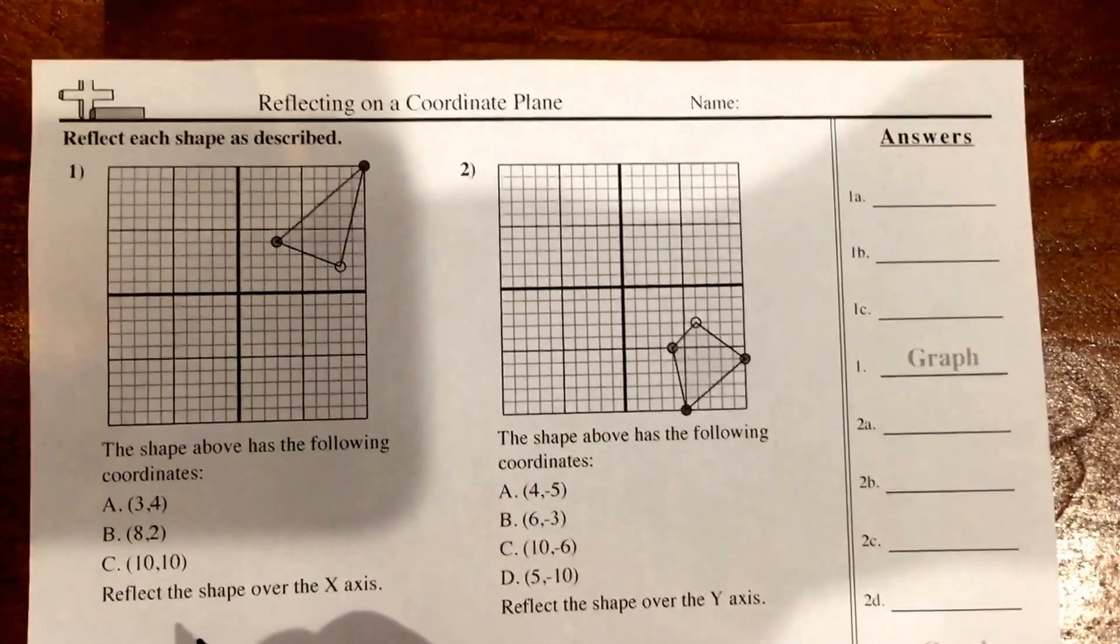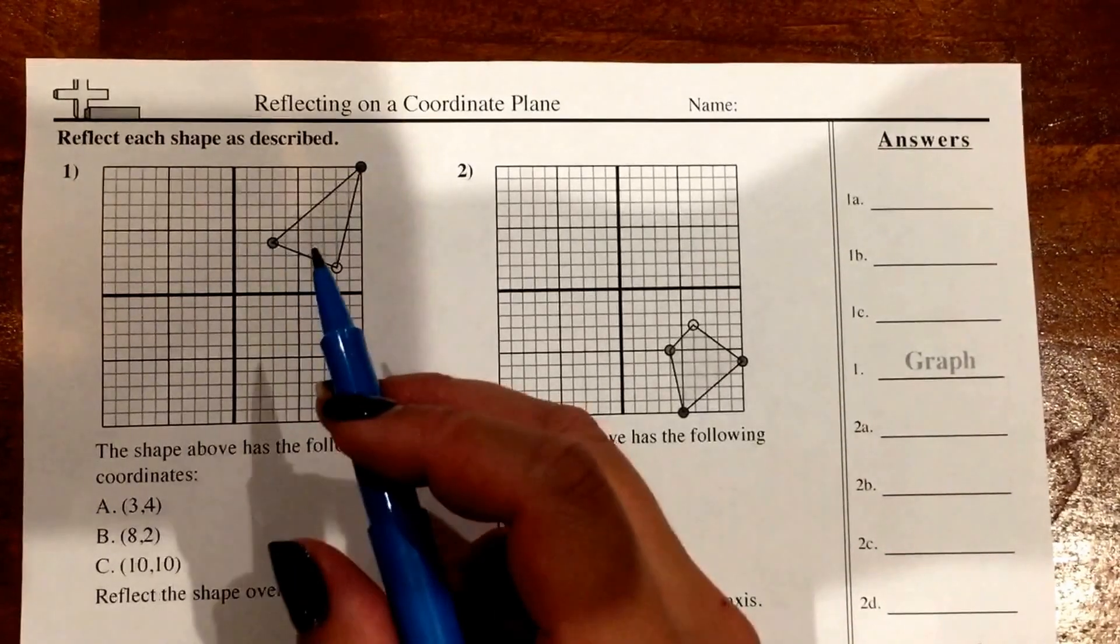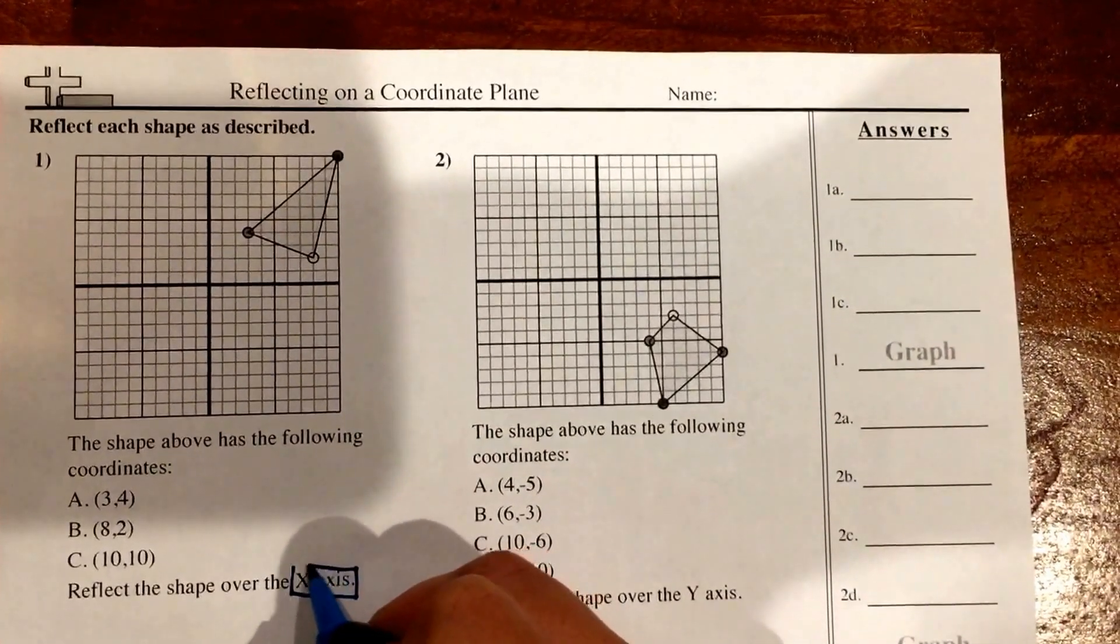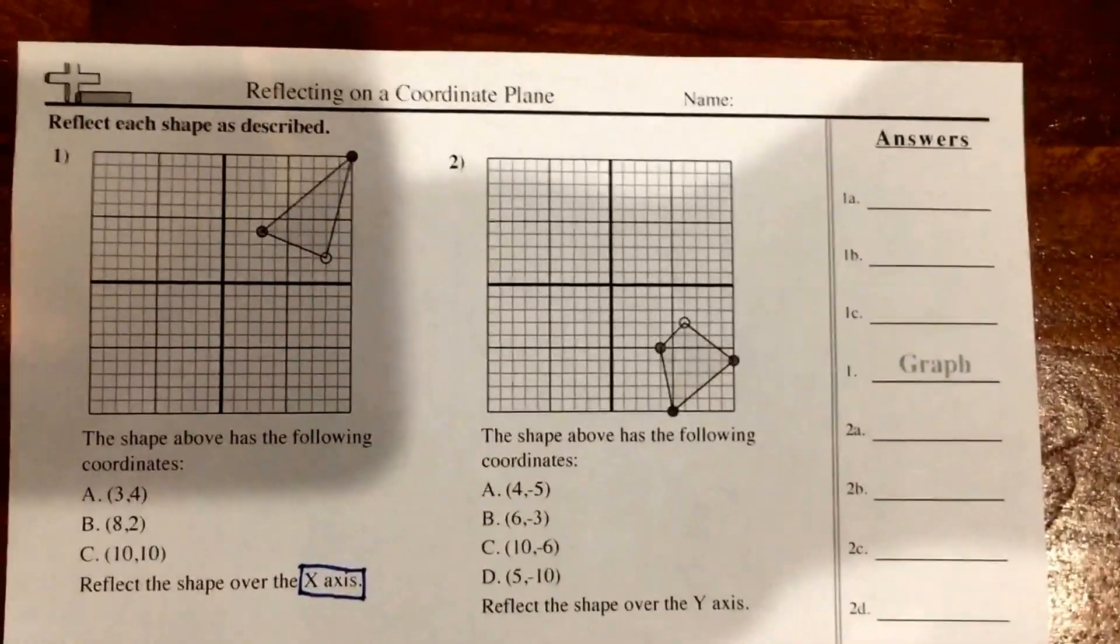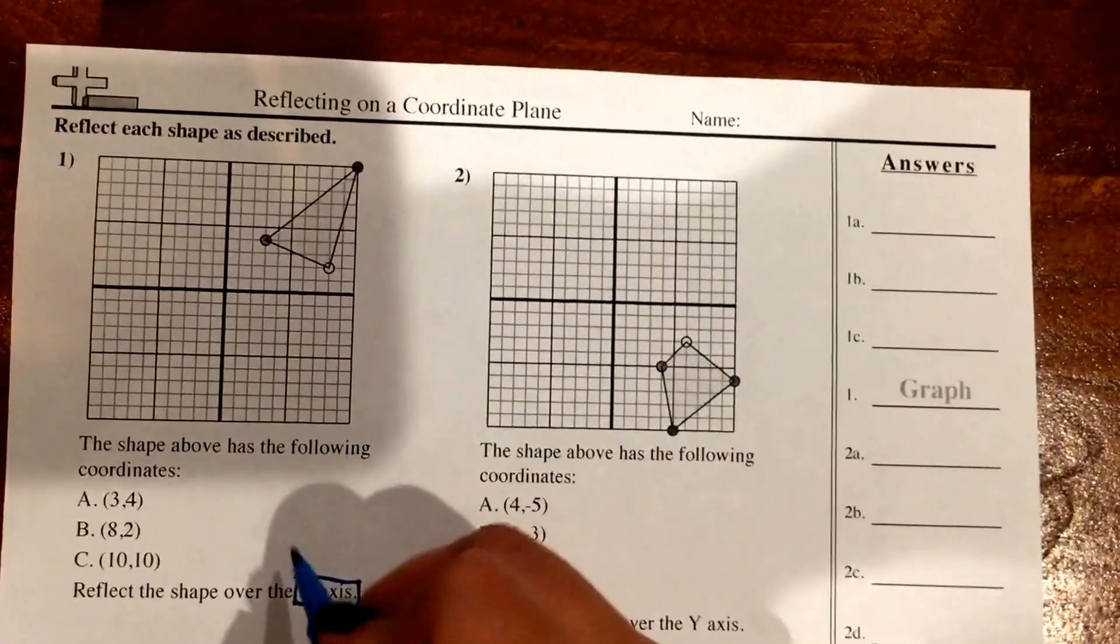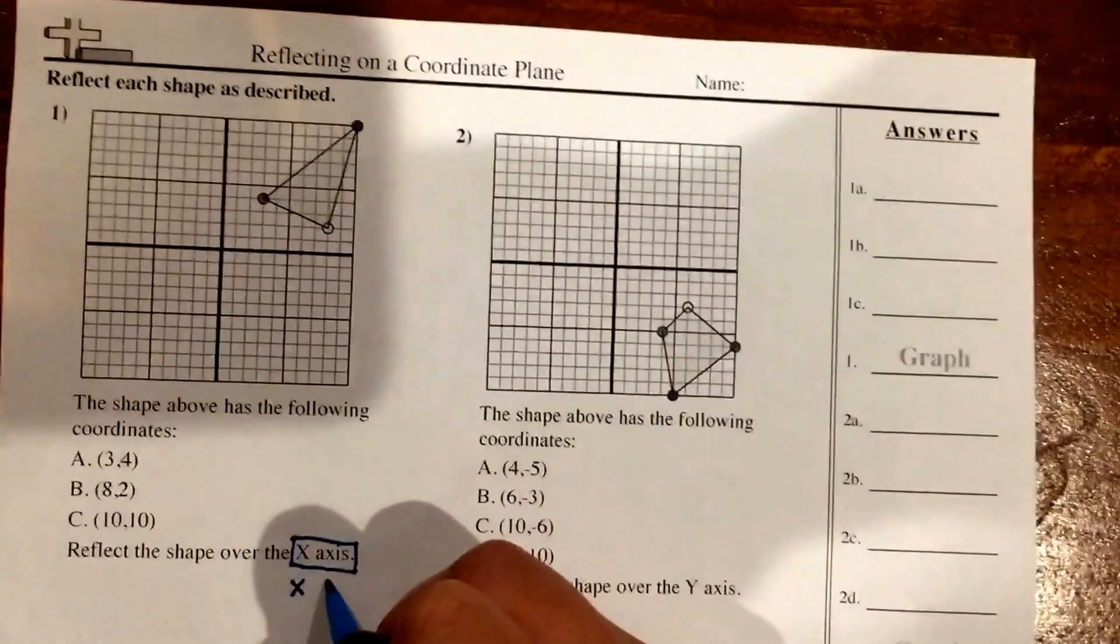So what it's asking you is to reflect the shape, that triangle in quadrant 1, reflect it over the x-axis. Now thinking of the rules that we learned in class, when you reflect over the x-axis, your x-coordinates stay the same.